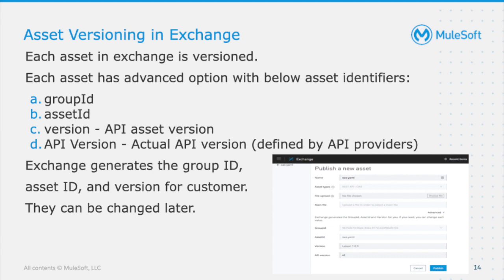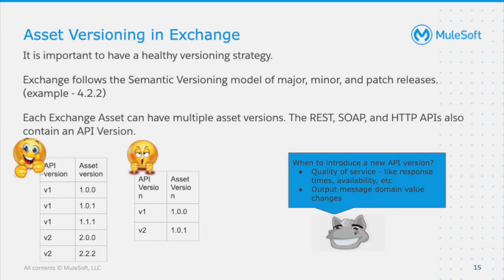We limit the number of assets customers can create in Exchange to avoid resource exhaustion attacks. The limit is 500 for trial accounts and 100,000 for master orgs, excluding deleted assets and Exchange-generated assets by MuleSoft. Each version of an asset is counted as a separate asset — so if you have 10 versions, that counts as 10 assets. Customers are notified at 80% utilization; at 100% Exchange throws an error and you cannot create any new asset or version. As a best practice, clean up assets that are no longer needed on a regular basis.